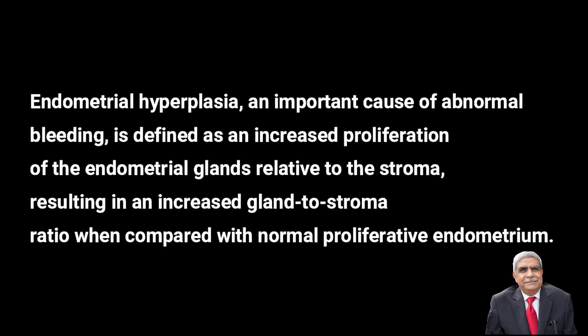Endometrial hyperplasia is important because it is responsible for abnormal endometrial bleeding or intrauterine bleeding. It is defined as proliferation of the endometrial glands relative to stroma, which results in an increased gland-to-stroma ratio when compared to the normal proliferative endometrium. In a proliferative endometrium, there is proliferation of both the stroma and the endometrial glands.